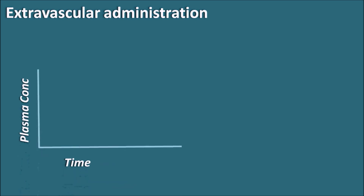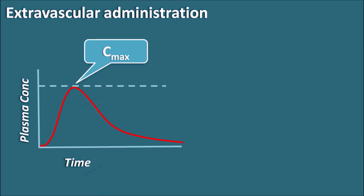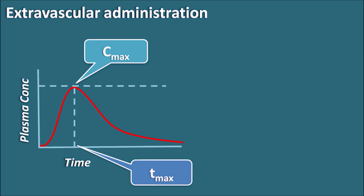In extravascular administration, if you observe the plasma concentration-time profile, the drug is absorbed and reaches a maximum concentration called C-max. The time required to achieve C-max is called T-max — the maximum time required to achieve peak plasma concentration. Within this profile, three phases can be observed.